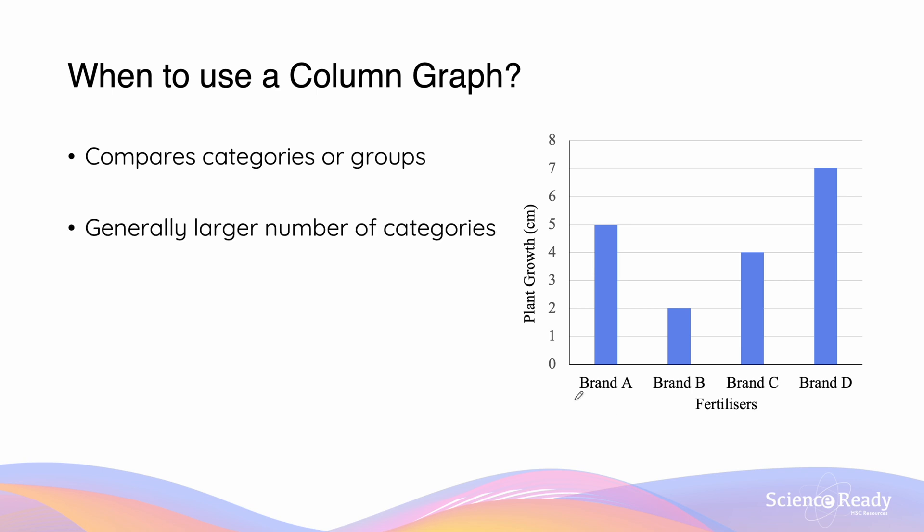And this is going to be used typically where there is a larger number of categories. The categories should also follow a natural hierarchy to easily compare between them. So an example might be we're looking at the effect of different brands of fertilizer on the growth rate. On our x-axis, we're going to have different fertilizer brands, while the y-axis is going to show us how much the plant grows over maybe a period of time of say one month.